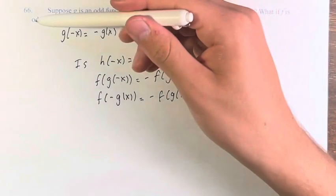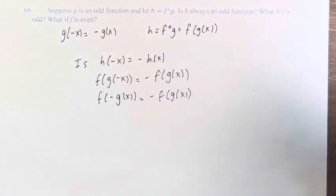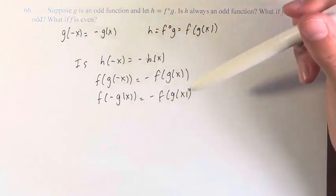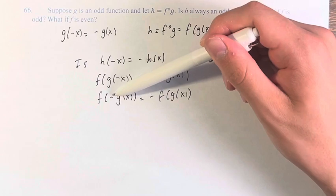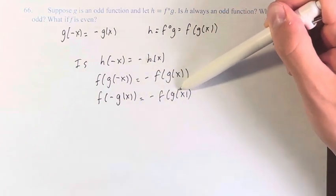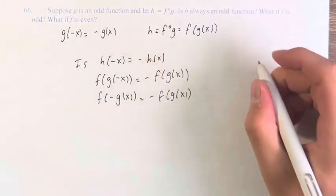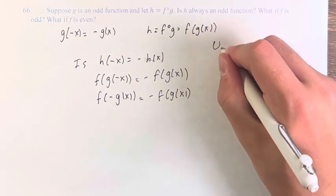So if f is odd, then yes, we do know this. The definition of an odd function is that f of negative something equals negative times f of something. So we can substitute. So if we don't know anything, it is unknown.